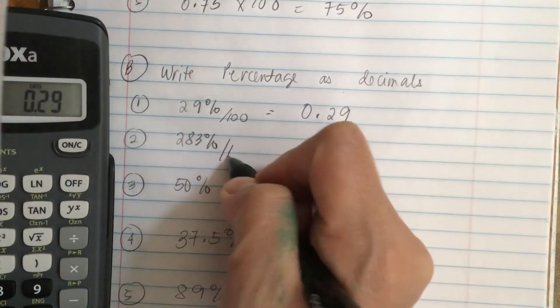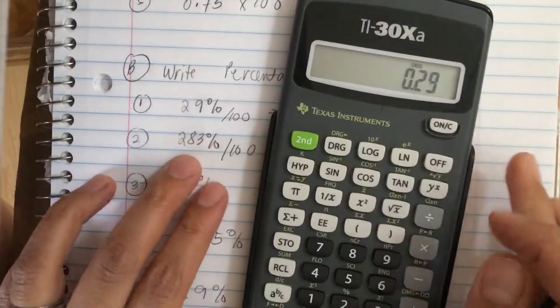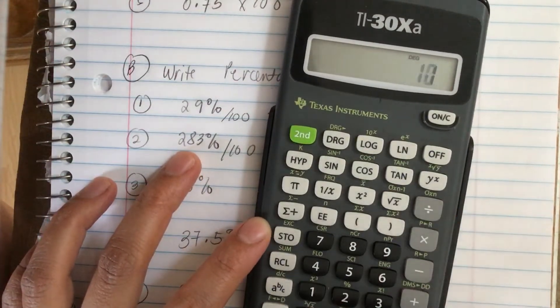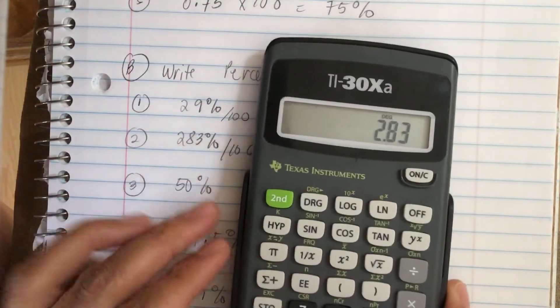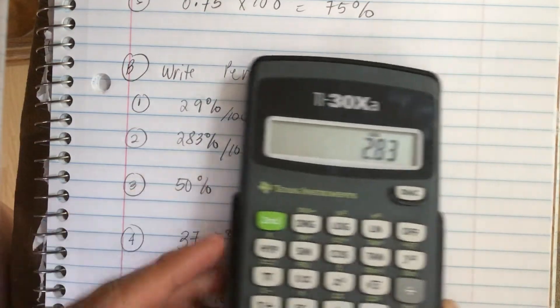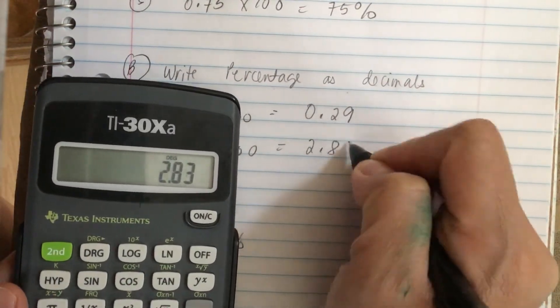So now we divide this by 100. 283 divided by 100, and we get 2.83.